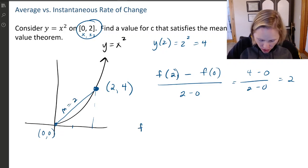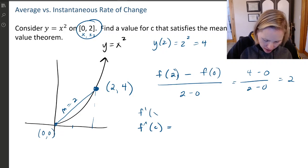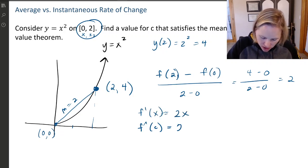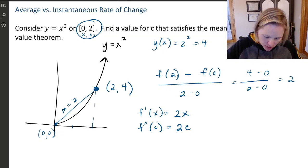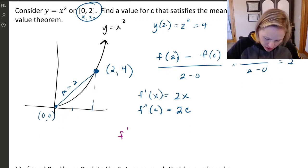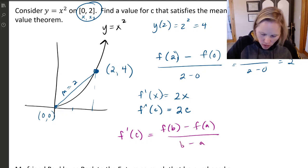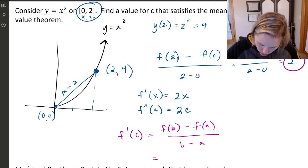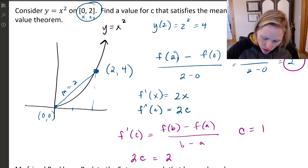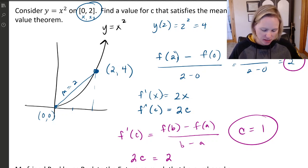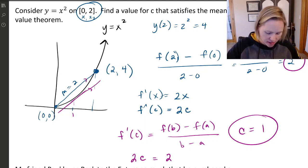Now the derivative: f prime of x is just 2x, so f prime of C is 2C. The mean value theorem says there's some C such that f prime of C equals f(b) minus f(a) over b minus a. That slope is 2, so 2C has to equal 2, which means C equals 1. So the value satisfying the mean value theorem is C equals 1. At C equals 1, the secant and the tangent would be parallel lines.